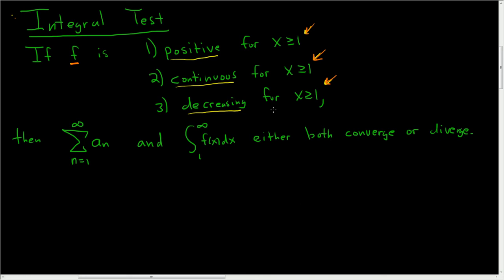Then the integral test says that this infinite series and this improper integral either both converge or diverge. Now what is a_n in all of this? Here a_n is equal to f of n. So it's just f of x except instead of x you have n.